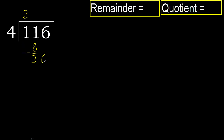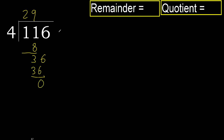Next — bring down 6, giving 36. 4 multiplied by 9 is 36. 36 is not greater, ok. Subtract — remainder is 0.